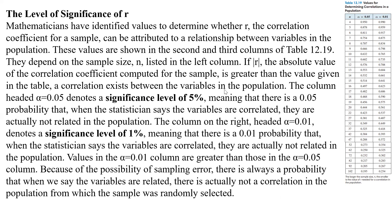The column headed 0.05 denotes a significance level of five percent, meaning there is a 0.05 probability that when the statistician says the variables are correlated, they're actually not related in the population. The column headed alpha 0.01 denotes a significance level of one percent, meaning there is a 0.01 probability that when the statistician says the variables are correlated, they're actually not related in the population. Values at the 0.01 level are greater than those at the 0.05 level, so you're better off there.